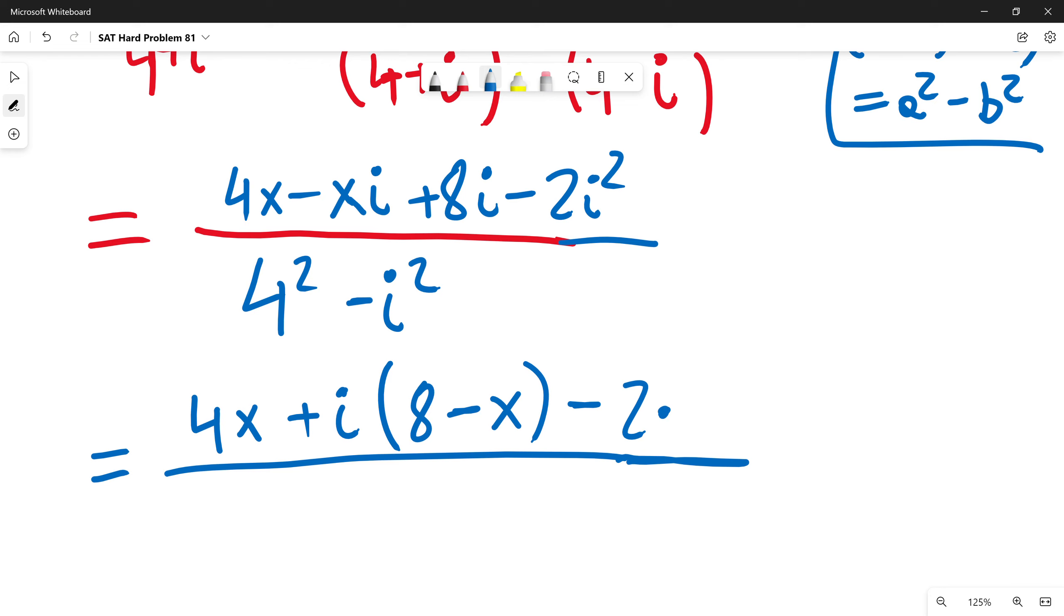i squared is just negative 1. And in denominator, 4 squared is 16 minus i squared is negative 1.